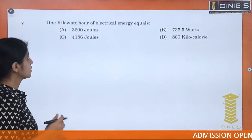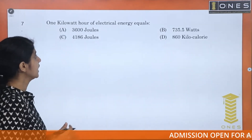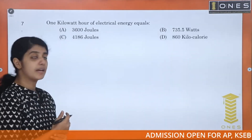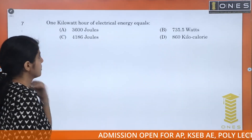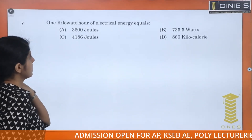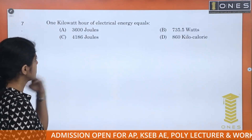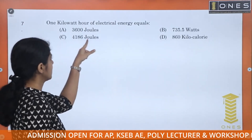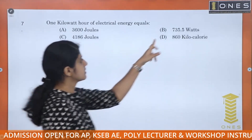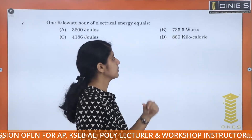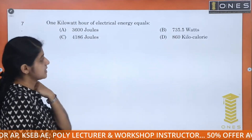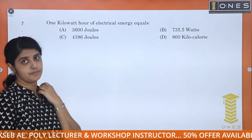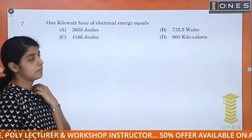Next question: 1 kWh of electrical energy equals — the options are 3600 J, 4186 J, 735.5 W, or 860 kcal.